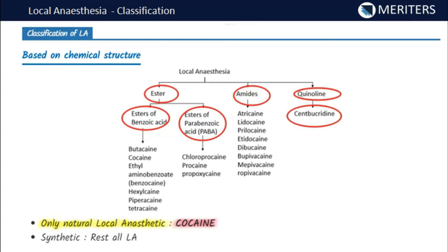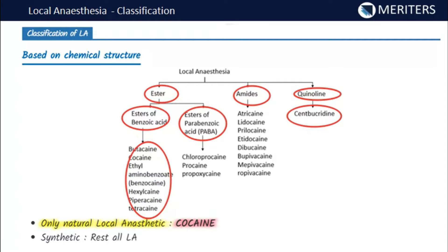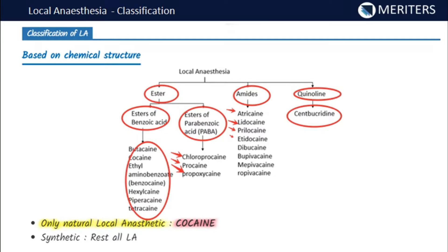Esters can be derivatives of benzoic acid or para-aminobenzoic acid. Esters of benzoic acid include butacaine, cocaine, ethyl aminobenzoate (benzocaine), hexylcaine, piperocaine, and tetracaine. Esters of para-aminobenzoic acid include chloroprocaine, procaine, and propoxycaine. In the amide class, we have articaine, lidocaine, prilocaine, etidocaine, dibucaine, bupivacaine, mepivacaine, and ropivacaine.